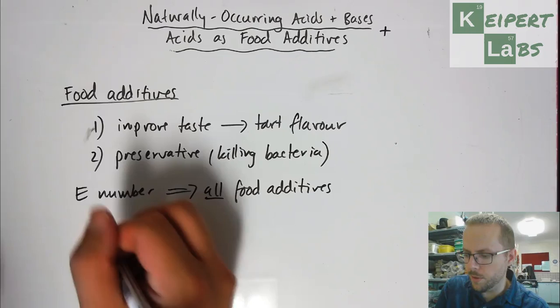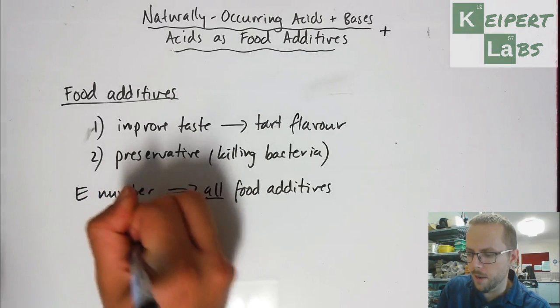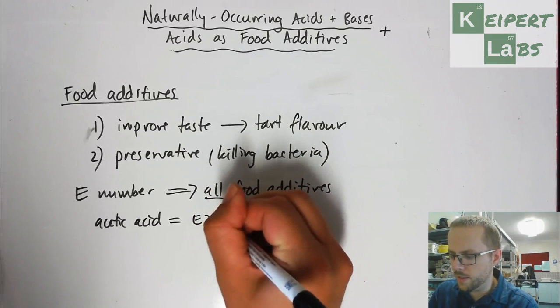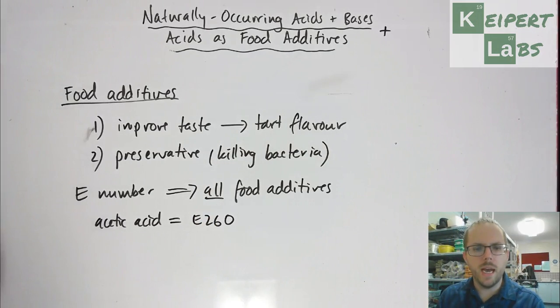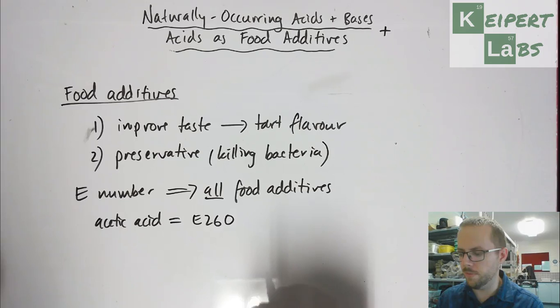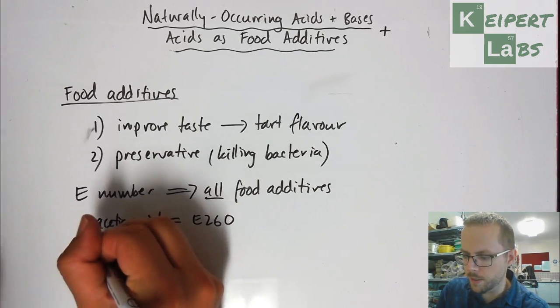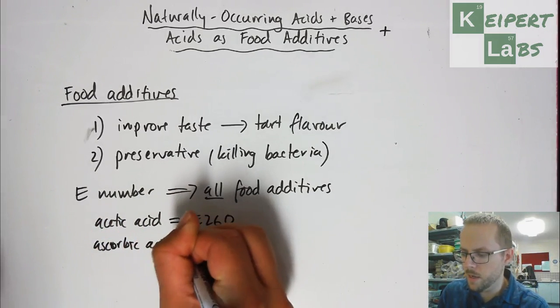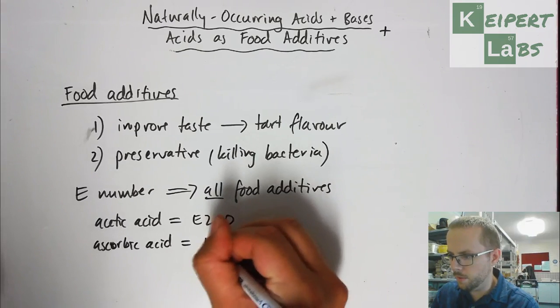So we have, for example, acetic acid, vinegar is in lots of different things. So in things like tomato sauce, for example, because it's actually part of the kind of cooking process and it improves its flavor, but it also helps to keep its shelf life. So we look for the code of E260. Ascorbic acid, vitamin C is often added to things like bread, and it's E300.